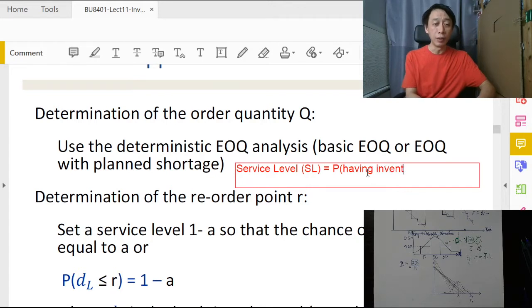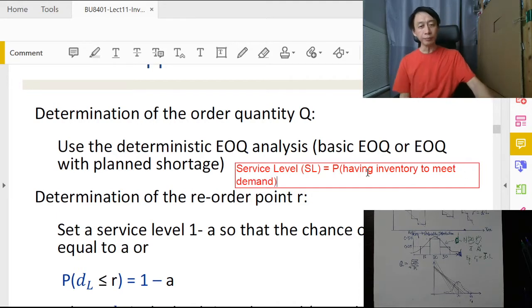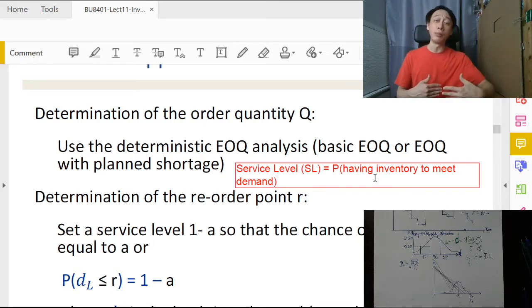A service level, or we call it SL, is basically defined qualitatively as the probability of having inventory to meet demand.